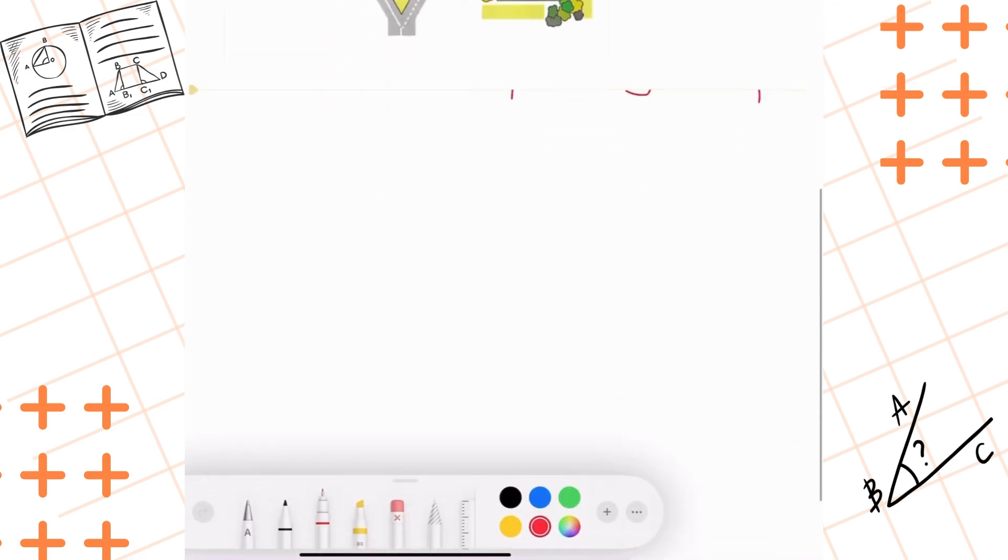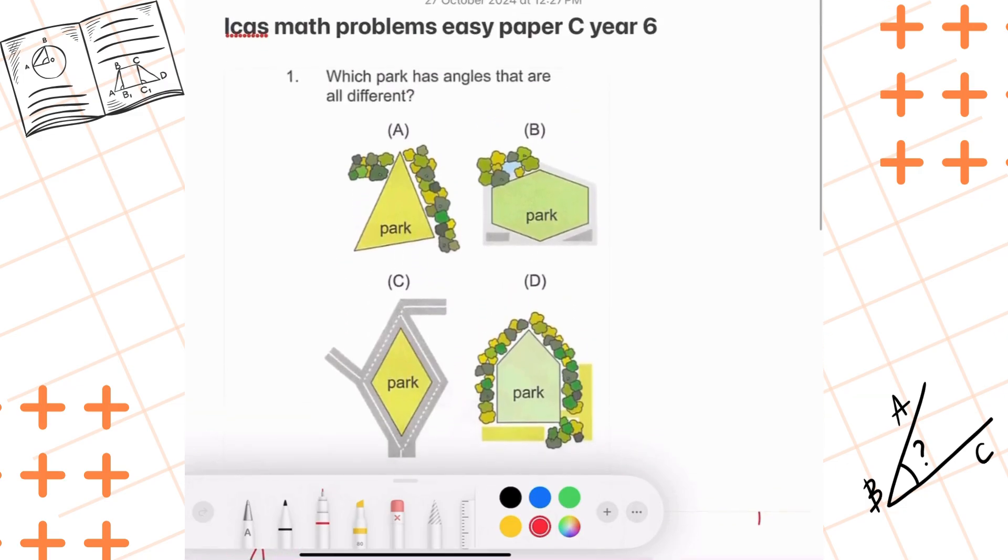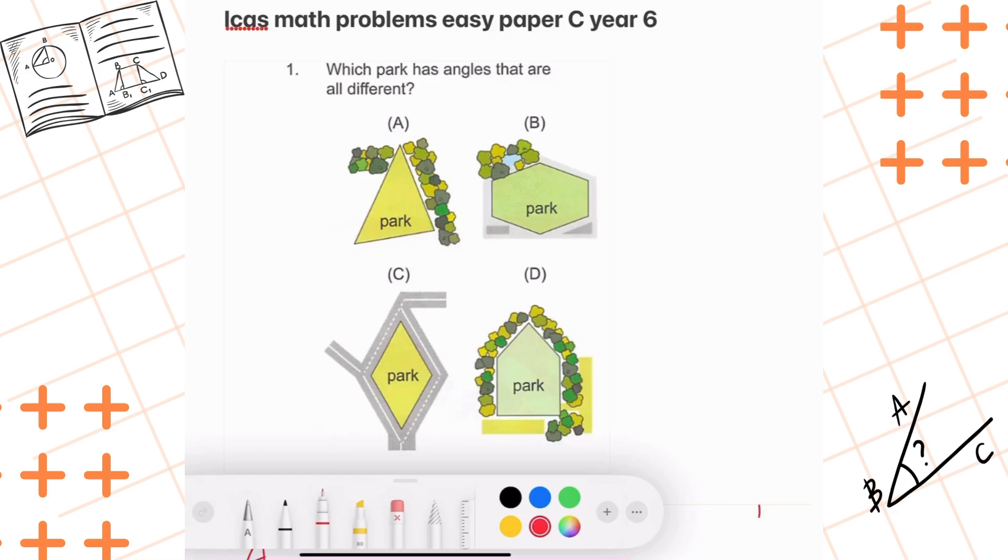So park A is potential, park B no, park C no too. Now park D is a pentagon, but it appears to have some equal angles. Since park A is a triangle, it can have three different angles. So park A is the correct answer because it's the only one that can have different angles.